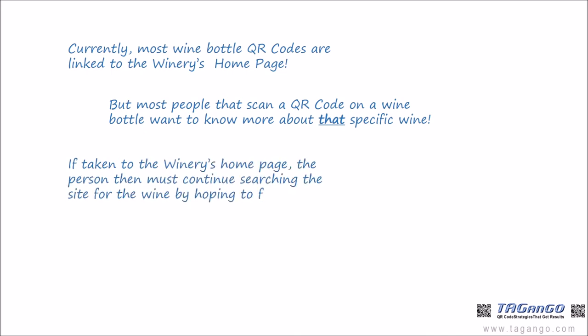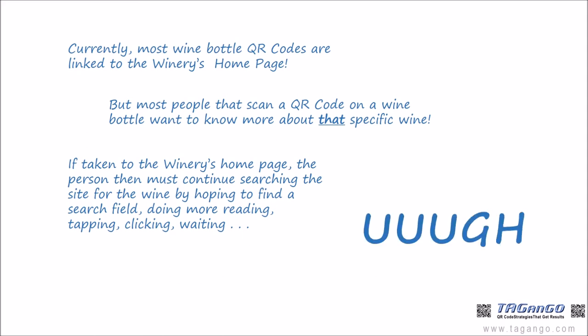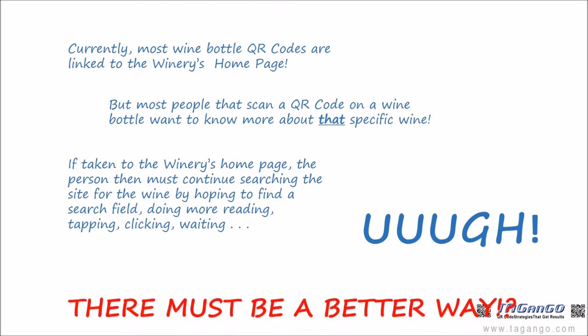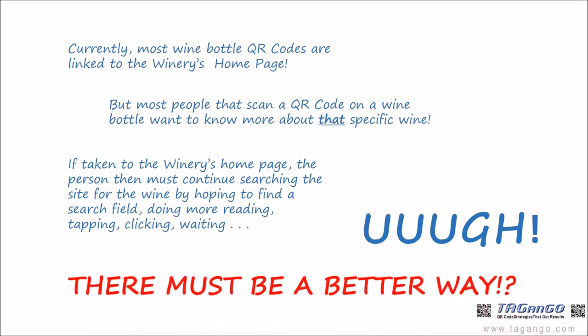But most people that scan a QR code on a wine bottle want to know more about that specific wine. If taken to the winery's home page, the person must then continue searching the site for the wine by hoping to find a search field, doing more reading, tapping, clicking, waiting. Ugh! There just must be a better way.